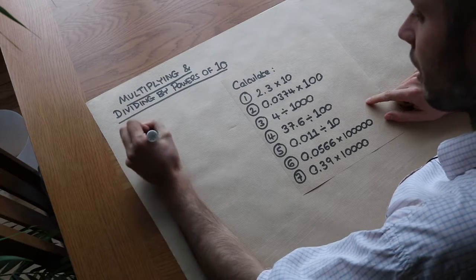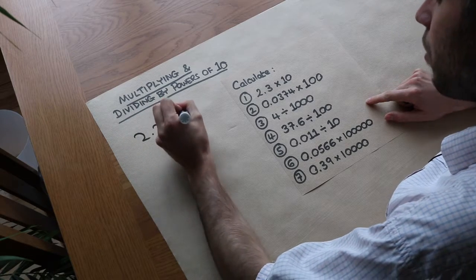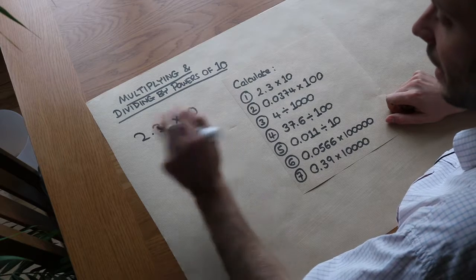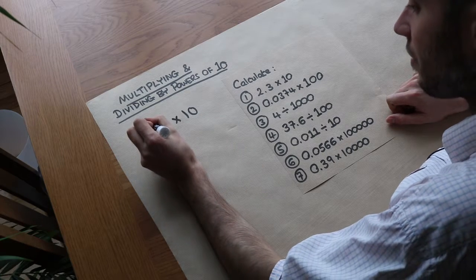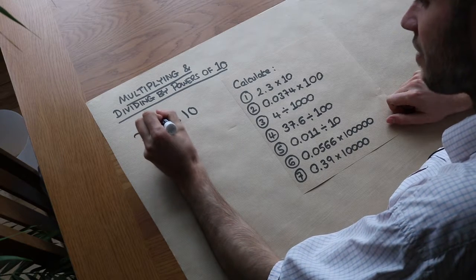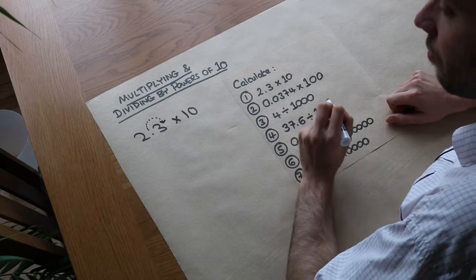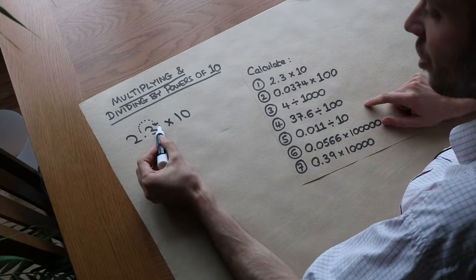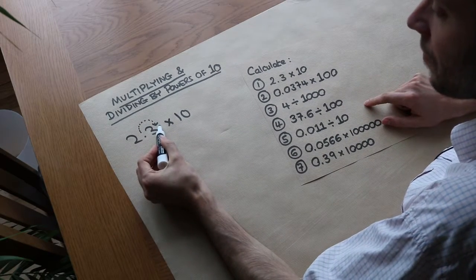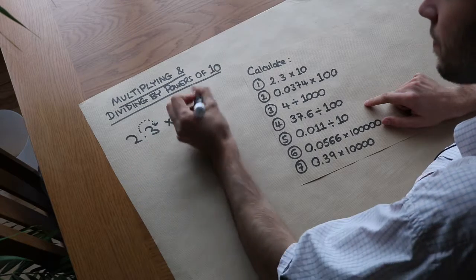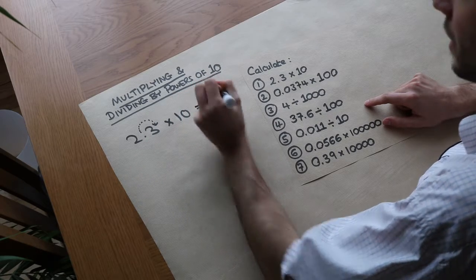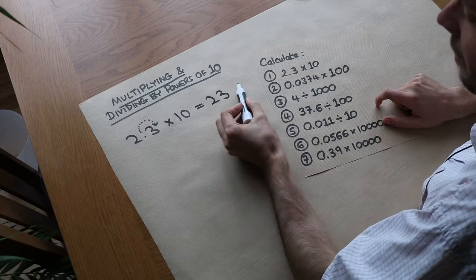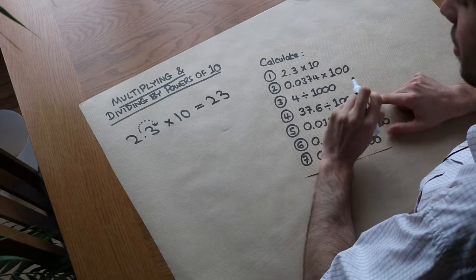For example, if I do 2.3 multiplied by 10, it's obviously going to make it bigger. What it does is shift the decimal point one position to the right. So the decimal point is now just after the 3, making it 23. You don't need to write the decimal point if there are no digits after it.